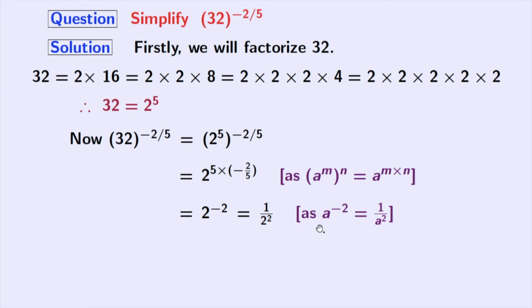As a power minus 2 is equal to 1 by a square where a is 2. After simplification of this, we get 1 by 4. And this is our final answer.